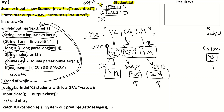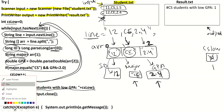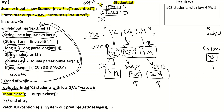Once we finish the while loop, we write the result. Since we need output in the file result.txt, we say output.println("Number of CS students with low GBA: " + csLow). If we used System.out.println it would print to the screen, but using output.println writes to the file. Finally, we close both files: input.close() and output.close().